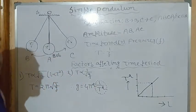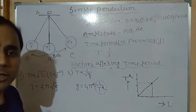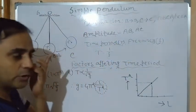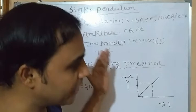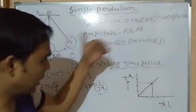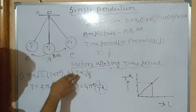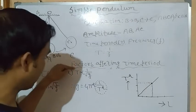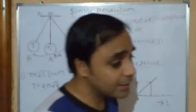The time period is always constant for a given simple pendulum. For example, if 20 oscillations take 2 seconds, then 40 oscillations take 4 seconds — both give T = 0.1 seconds. Regarding acceleration due to gravity: if g increases, time period decreases; if g decreases, time period increases, because g is not constant at all points.